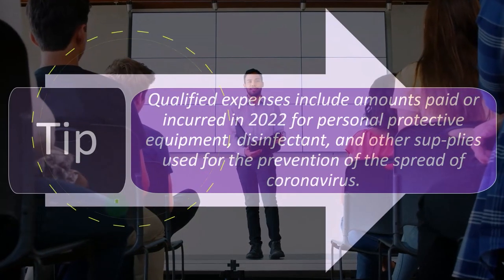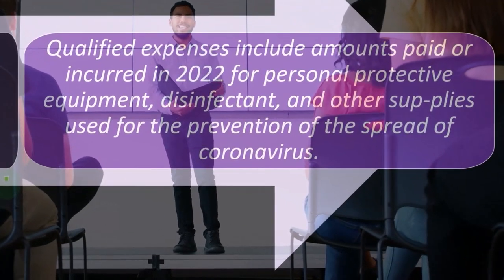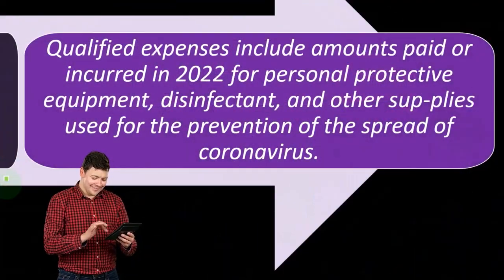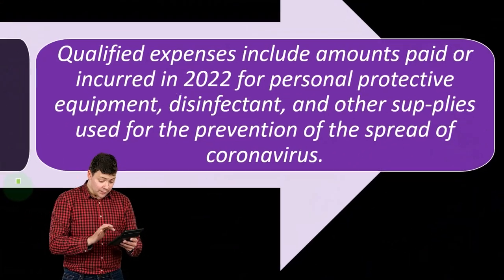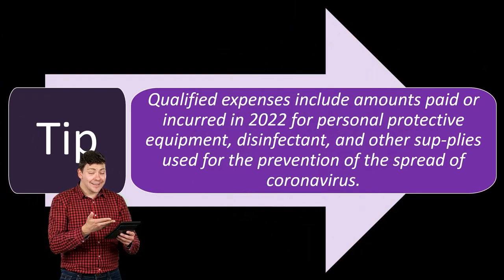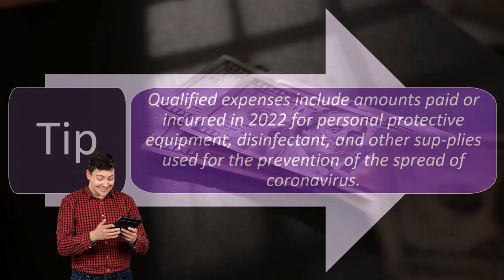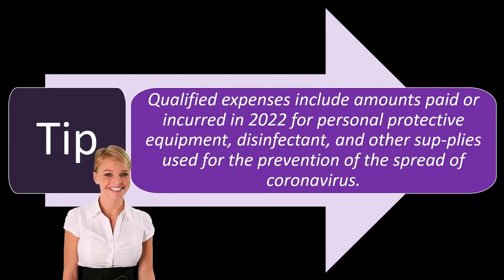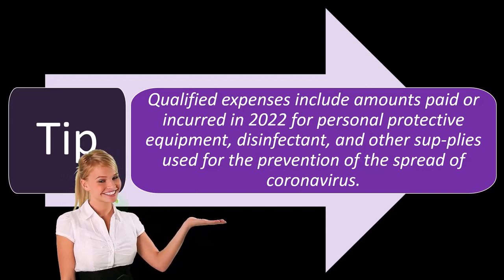Qualified expenses include amounts paid or incurred in 2022 for personal protective equipment, disinfectant, and other supplies used for prevention of the spread of coronavirus. It was kind of funny — during the whole time of the coronavirus, I thought it was interesting that they expanded the definition of qualified expenses so people can take this $300 expense credit to include sanitary supplies you might have paid for in the classroom, as if they needed that to reach the $300. They didn't increase the threshold; I think most teachers already hit the threshold. They didn't really do anything, so I thought that was kind of funny.